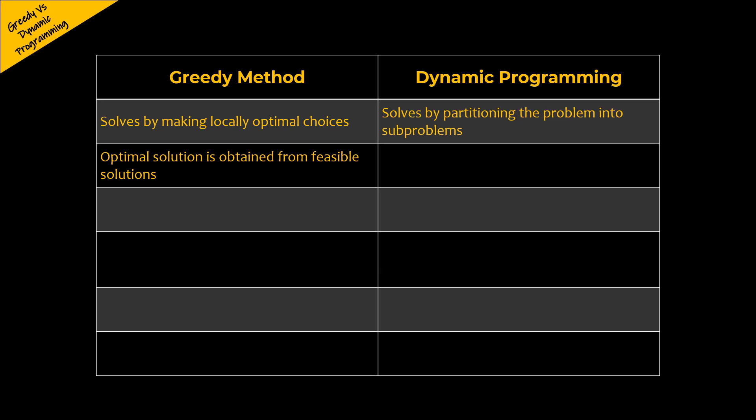In greedy method, the optimal solution is obtained from feasible solutions, but whereas in dynamic programming approach, there is no concept of feasible solutions.